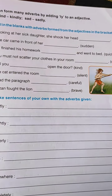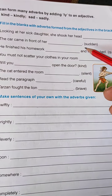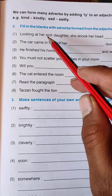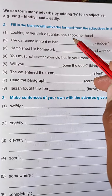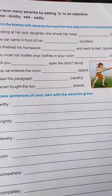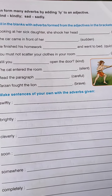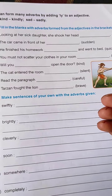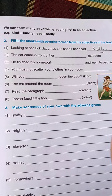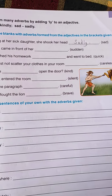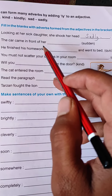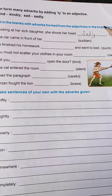Looking at the first one: 'Looking at her sick daughter, she shook her head ___.' The adjective given is 'sad,' so we add -ly and write sadly. Second one: 'The car came in front of her ___.' The adjective is 'sudden,' so we write suddenly.